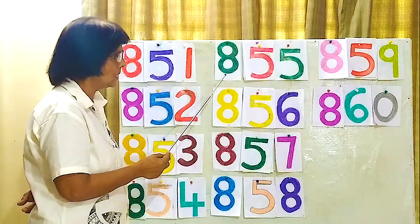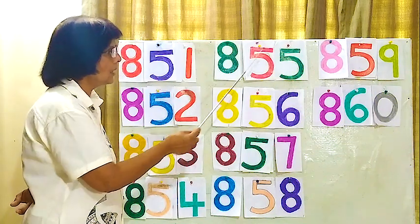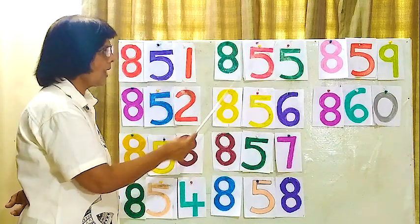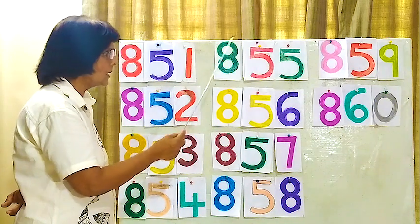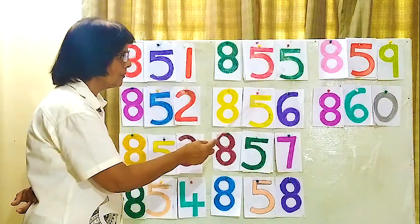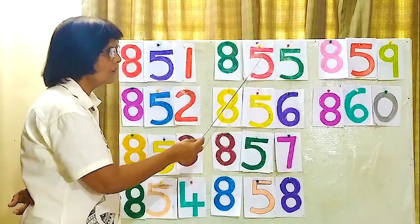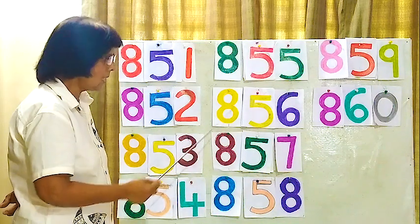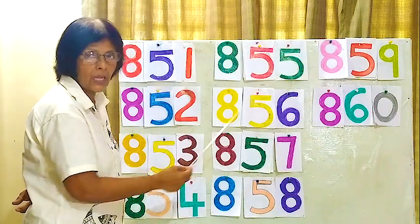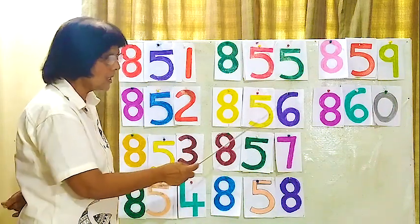Now the next line here, this line. 855, 855, 855, 855. 856, 856.